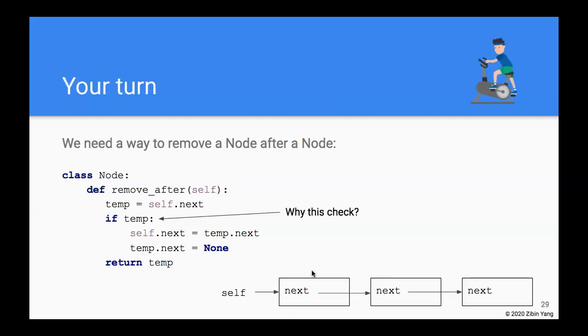Here is a question for you: Why do we have to check if temp, or in other words, if temp is not None before we execute these two lines of code? In other words, is there a situation in which temp can be None?